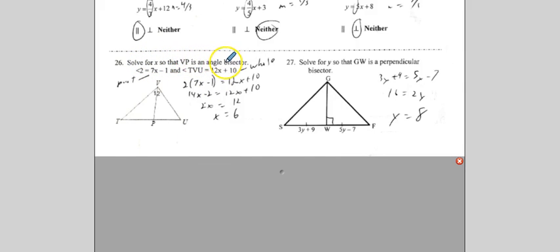Okay, so solve for x so that VP is an angle bisector, which means 1 equals 2. Now, it says angle 2 is 7x minus 1. That's the part. TVU is the whole thing. So you need two of these, 7x minus 1, 7x minus 1, to be equal to 12x plus 10. You distribute the 2. I subtracted 12x and added 2. Divided by 2, and it gave me 6. That's all I had to do. Solve for x. Solve for y so that GW is a perpendicular bisector. Well, that just simply means that this must be equal to that. So I set them equal to each other. This time I subtracted 3y and added 7. Divide by 2. y is 8.